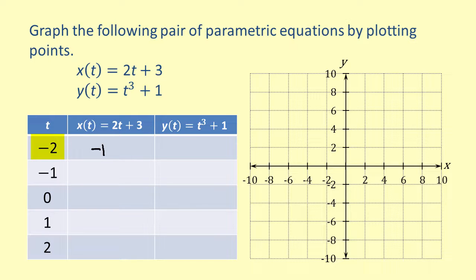Substituting negative 2 for T in Y of T, we get negative 2 cubed plus 1, which is equal to negative 7.